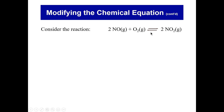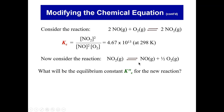Here's another example, starting from the original equation with Kc equal to 4.67 times 10 to the 13. Comparing the new equation to the original, you'll notice two things: it's flipped — the reactants and products are switched — and all the coefficients are halved. For example, O2 had a coefficient of 1, now it's one-half; NO had a coefficient of 2, now it's 1; and NO2 had a coefficient of 2, now it's 1.